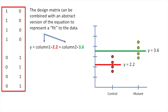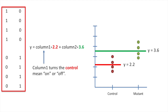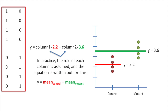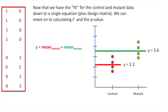The design matrix can be combined with an abstract version of the equation to represent a fit to the data. Column one turns the control mean on or off; column two turns the mutant mean on or off. In practice, the role of each column is assumed, and the equation is written out as y equals the mean of the control data plus the mean of the mutant data. Now that we have the fit for the control and mutant data down to a single equation plus design matrix, we can move on to calculating F and the p-value.